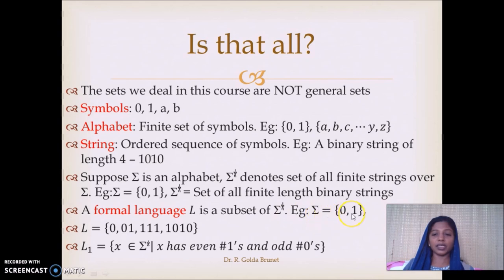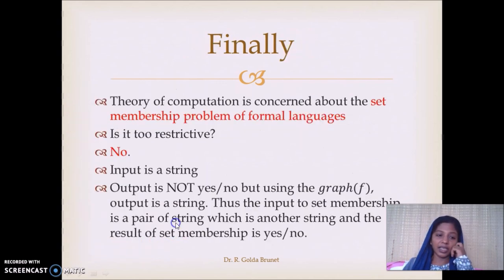A formal language L is a subset of Σ star. For example, if Σ is {0, 1}, we can define a formal language L which includes 4 elements: {0, 0, 1, 1, 1, 1, 1, 1, 0, 1, 0}. Another interesting language is L1 which is equal to the set of all strings X that belongs to Σ star such that X has even number of 1s and odd number of 0s. And we are more interested in languages of this sort like L1 because this set of strings, the X has some property associated with it or it has a characteristic which defines the string to be a member of L1, and we are interested in such languages.